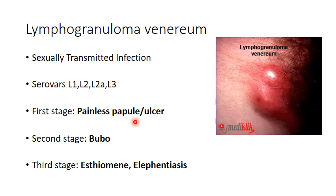In the second stage, inguinal lymph nodes in the groin become enlarged, tender and soft as shown in the figure here, which is also called a bubo. In the third stage, esthiomene formation occurs, which is an edematous granulomatous hypertrophy on the vulva, scrotum or penis. Elephantiasis of the vulva or scrotum may also occur.